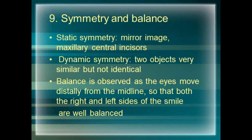The final tooth component is symmetry and balance. Symmetry is a harmonious relationship between various elements. There are two types: static symmetry, where the maxillary central incisors are exactly mirror images of each other; and dynamic symmetry, such as lateral incisors, where two objects look similar but are not identical. Balance means that as we start viewing from the midline going distally, both the right and left sides should look well balanced.